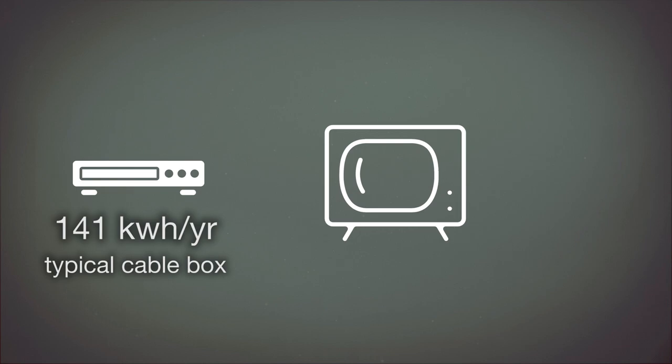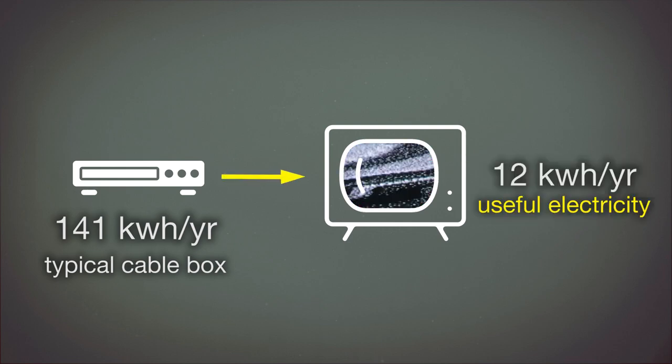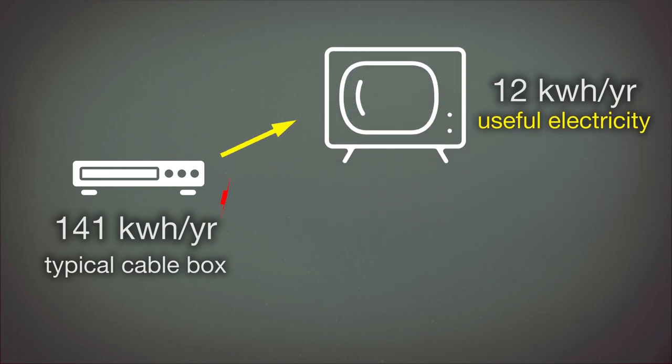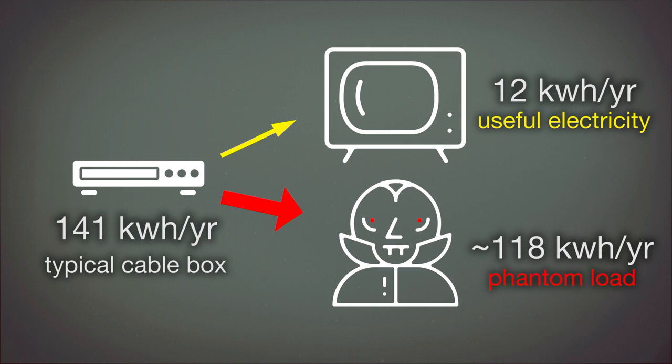Let's say a person watches television for 2 hours per day, so they are using that cable box for 2 hours per day. That means that 2 out of 24, or 1 twelfth of that number of kilowatt hours, is useful electricity. The remainder, approximately 118 kilowatt hours per year, is phantom load.